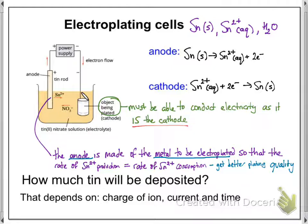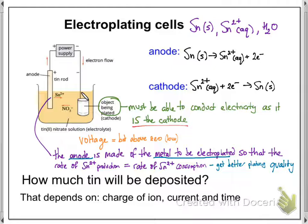So how much tin will be deposited? Well, this depends on a number of things: the charge on the ion (in this case 2+), the current passed through the cell, and for how long. By the way, the voltage of this cell is kept a bit above zero. The voltage is generally the E° of the oxidant minus the E° of the reductant, plus a little bit more to overcome resistance in the cell. The difference between them would be zero, so it's just a little bit above zero.